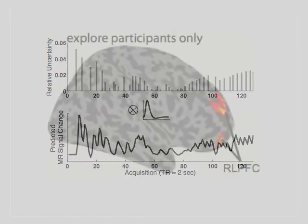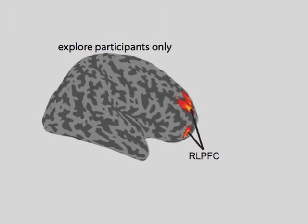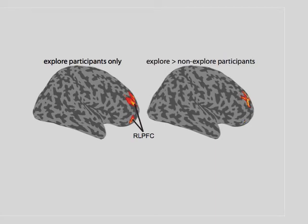Taking this approach, what we find — consistent with our hypothesis — is that the rostrolateral prefrontal cortex is the region that tracks relative uncertainty in this continuous way. Moreover, it does so only in those individuals that use relative uncertainty for their exploratory choices. That's evident when one looks individually at just the group of explorers: rostrolateral prefrontal cortex activity correlates with that relative uncertainty signal, and also when you directly compare those who explore with relative uncertainty against those who don't.